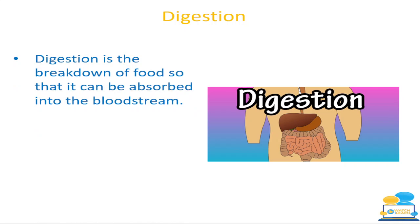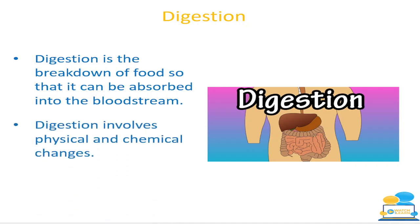Digestion is essentially the breaking down of food so that it can be absorbed into the bloodstream. In home economics we look at nutrition, so we need to know how all the food we are taking into our bodies is actually broken down and utilized. Digestion involves both physical and chemical changes, which we'll be looking at in more detail.